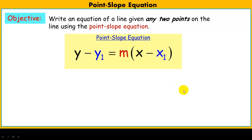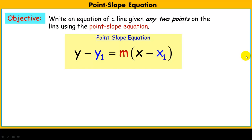Hey guys, today we're going to learn how to write an equation of a line given any two points on the line, and we're going to use the point-slope equation to do it. So here's the point-slope equation, and while it may look complicated at first, it's pretty simple and straightforward.